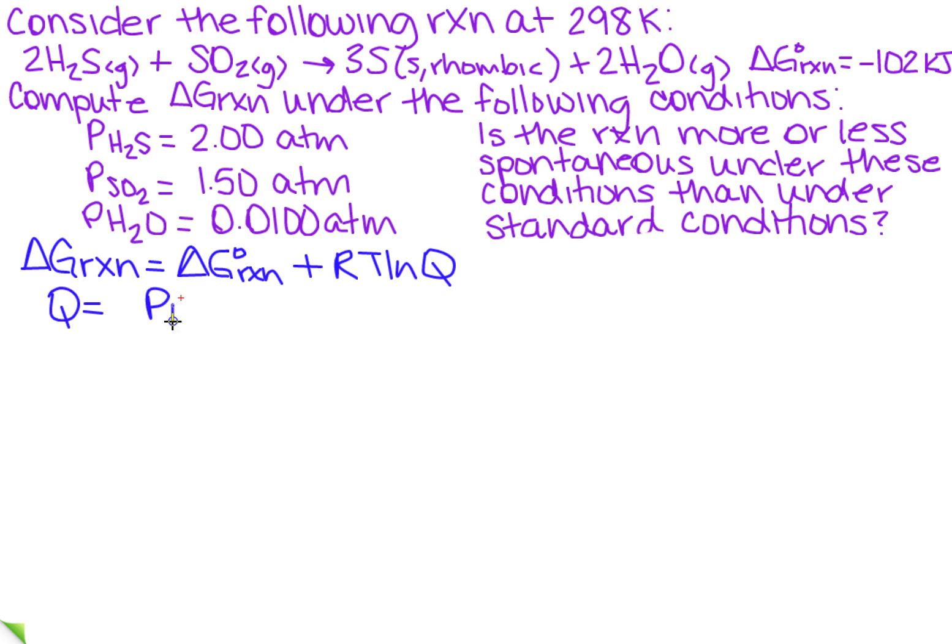So I take the pressure of the water divided by the pressure of the H2S times the pressure of the SO2. So this would give me 0.0100 divided by 2.00 times 1.50.